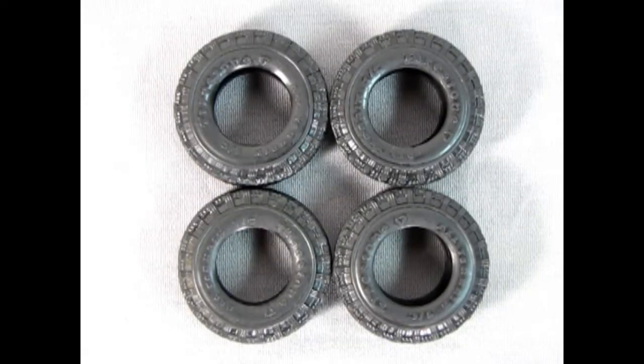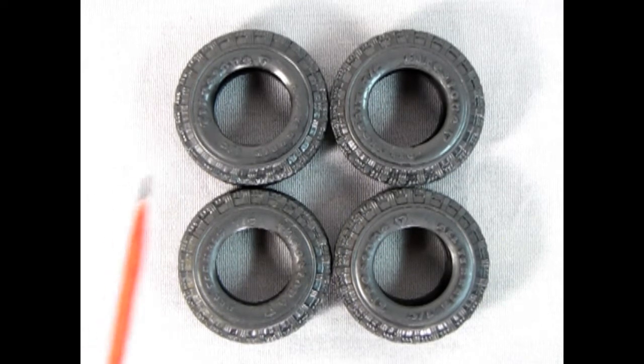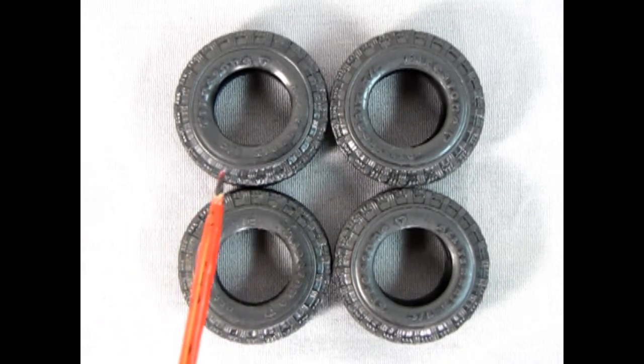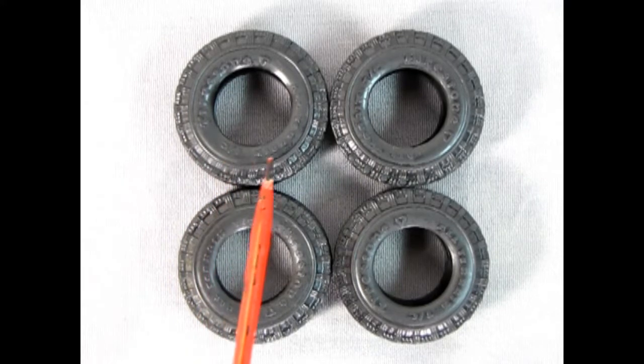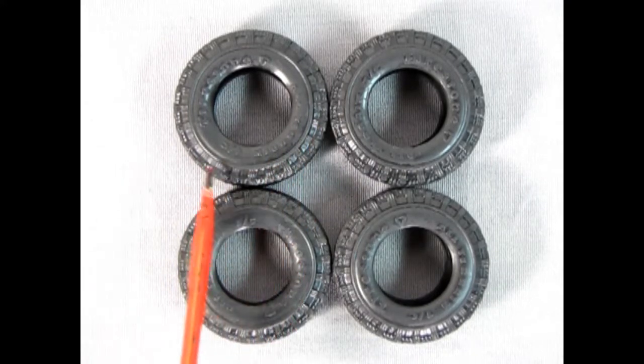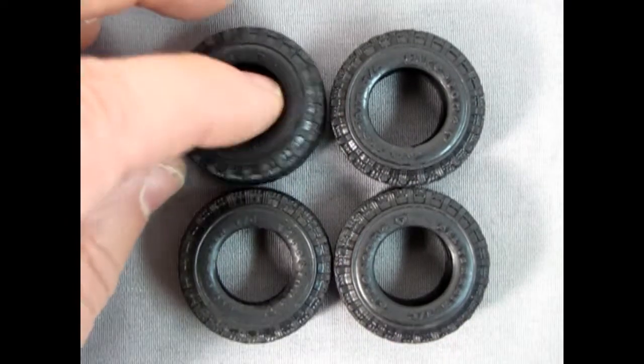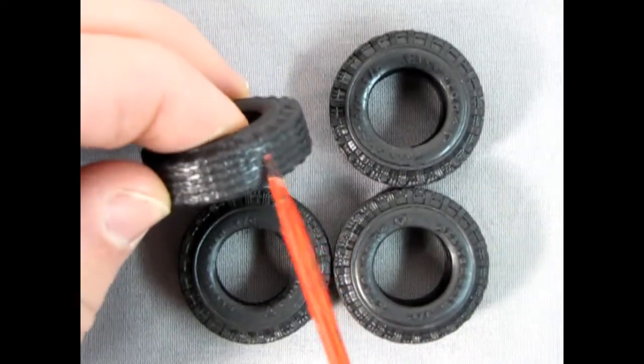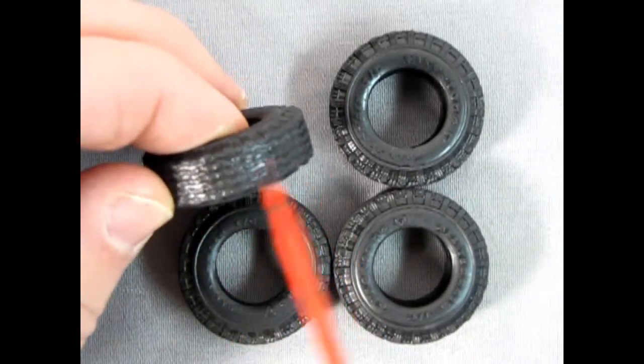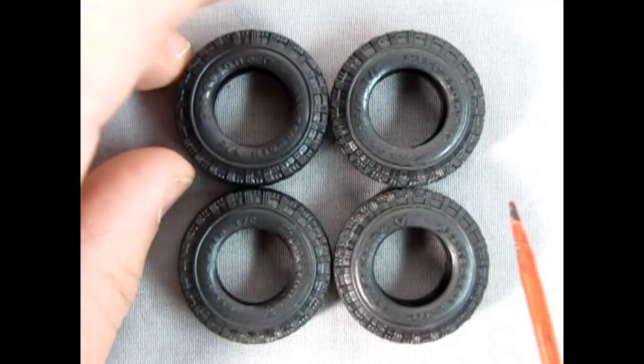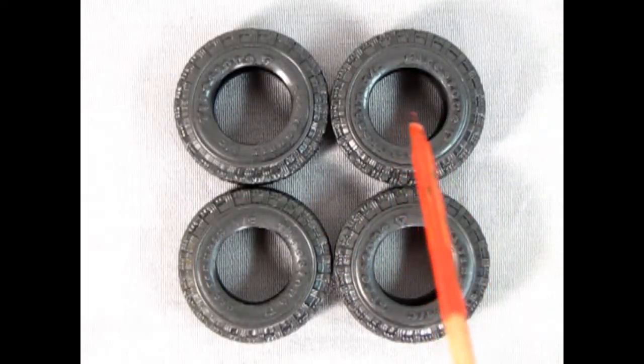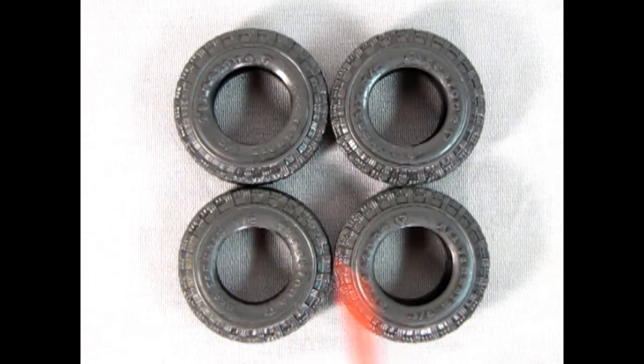Here we have our very nicely done Firestone all-terrain TC tires. These are excellent because the lettering sticks up quite high and on the side wall you also get the nice pie crust edge to it. Sort of like an apple pie. And then here we have our wonderful tread underneath. So again very nicely done. There is no webbing in between the tires that you have to worry about cutting out. So very nice.